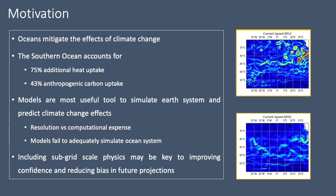The motivation behind this study is that oceans play a critical role in mitigating the effects of climate change. The Southern Ocean south of 30 degrees accounts for 75% of the additional heat uptake and 43% of the anthropogenic carbon uptake.